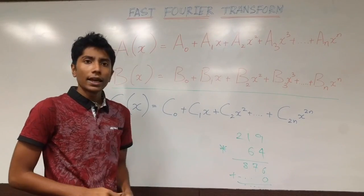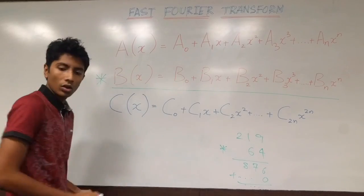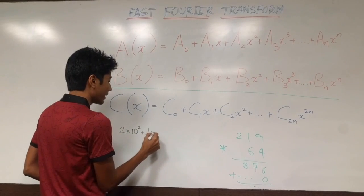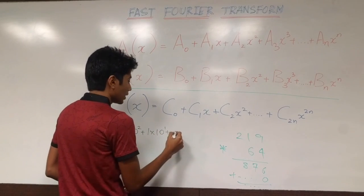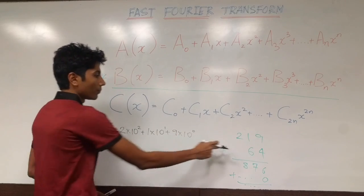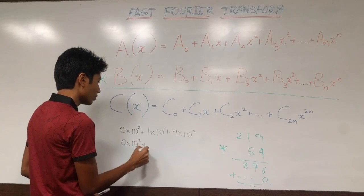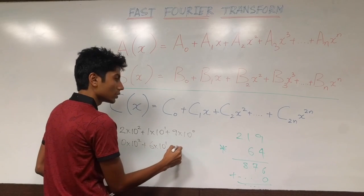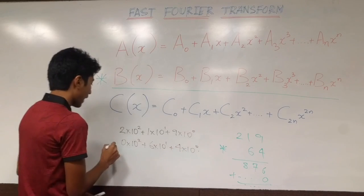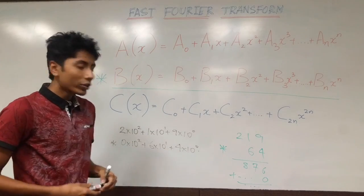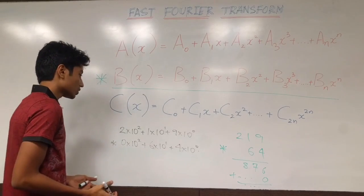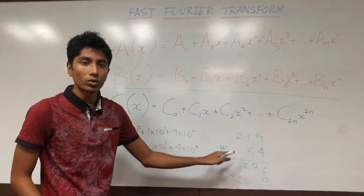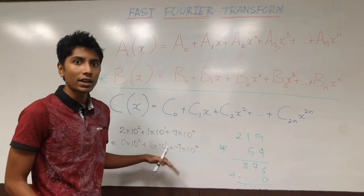The other way to think about this is that these are two polynomials. Their expression is given by 2·10² + 1·10¹ + 9·10⁰ for 219, and 0·10² + 6·10¹ + 4·10⁰ for 64, and then you multiply these two. Now, why would you think in terms of polynomials when you have simple digits? This is simpler and equally efficient.